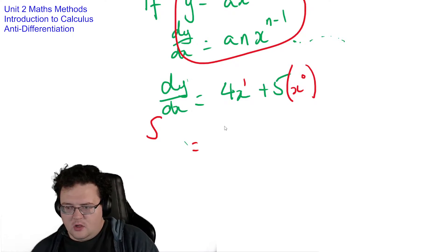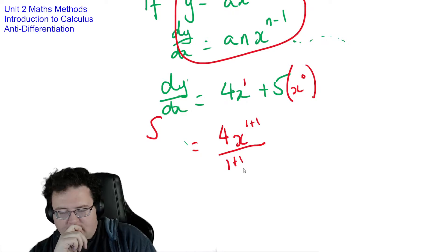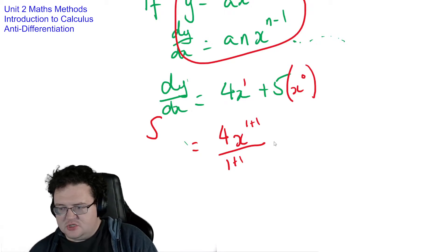In that case, it's 1. I'm going to go 4x. 1 plus 1 divided by 1 plus 1. So what I'm going to do is I'm going to add 1 to the power and divide by the new power. And then I'm going to do the same thing to this one here. That's why I put the x to the 0 in here. So it's 0 plus 1, which is 1. And then I'm going to divide by the new power.